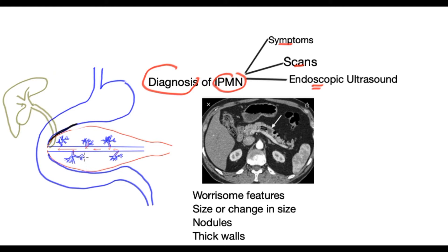The main function of the pancreas is to produce a fluid called pancreatic juice. This is produced within the substance of the pancreas and goes down tiny tubes into the main tube. These are called the side branches, and this is the main tube or main duct of the pancreas. The function of this juice is to digest the food coming down from the stomach and break it down.